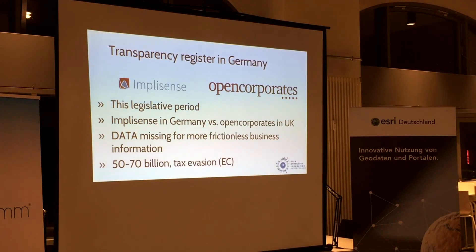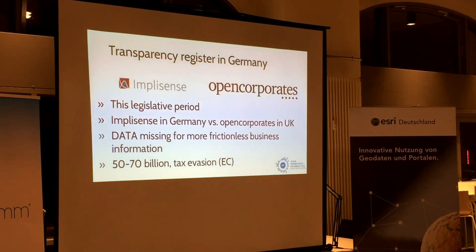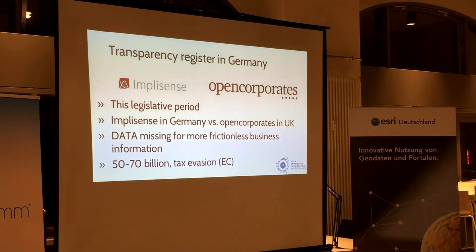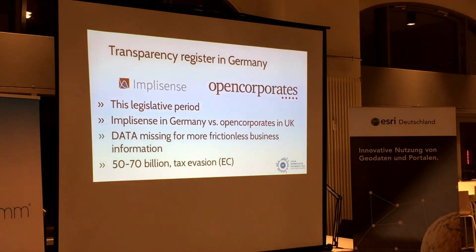We have the transparency register in Germany currently being discussed. Why this is important: if you remember from last year, the Panama Papers — one of the tools to fight tax evasion, which according to European estimates amounts to 50 to 70 billion euros. If you had an open registry — like the UK has — using data from a company called OpenCorporates, who I think are sitting roughly one mile from here, you could look up what company is sitting where and who owns it, making it much easier to do business.